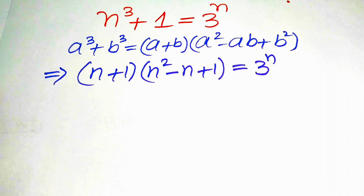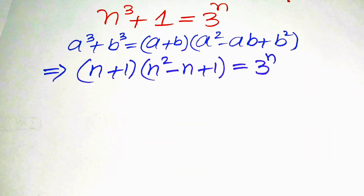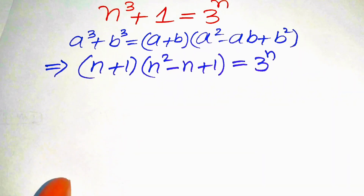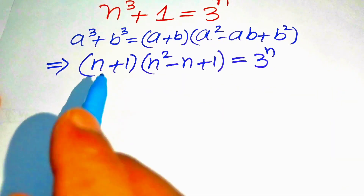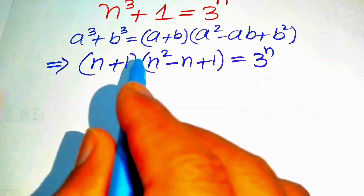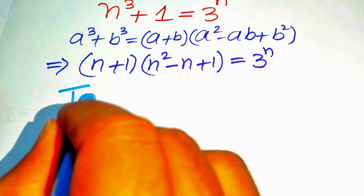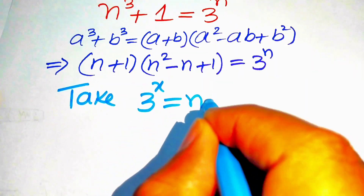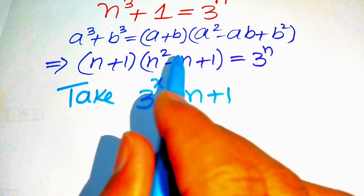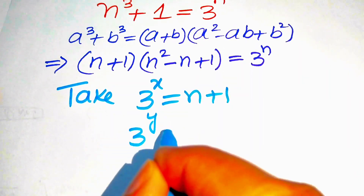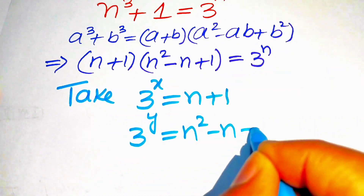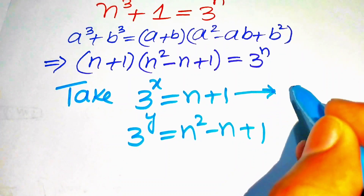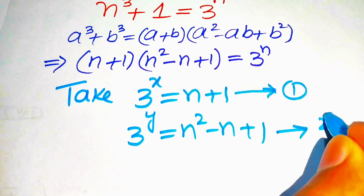To solve further, we take substitutions. We assume n plus 1 equals 3 to the power of x — call this equation 1 — and n squared minus n plus 1 equals 3 to the power of y — call this equation 2.